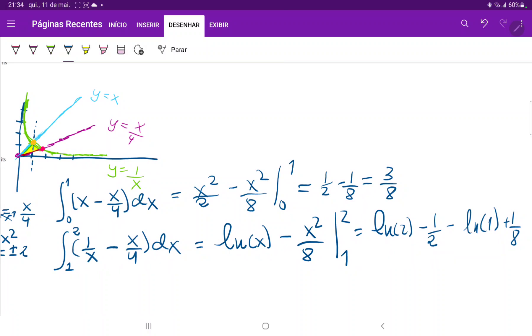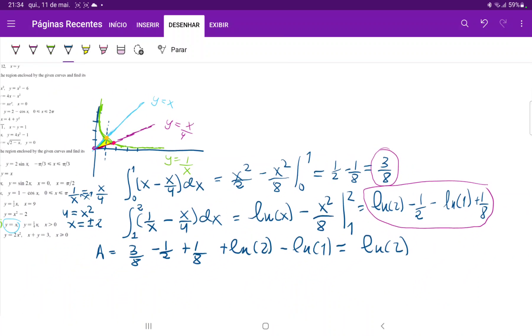So now when we join everything, let us join this with this, because we're joining both the integrals. So the area is equal to 3 eighths, and I'll just put the numbers to one side and the ln's to the other side, minus 1 half, plus 1 eighth, and then plus ln 2 minus ln 1, which is equal to, well, the numbers, they give us 3 eighths plus 1 eighth, which is 1 half, minus 1 half. So that's 0. So this is just 0 plus ln 2, and then minus ln 1. Minus ln 1 is just minus 0, so our final answer is just ln 2.